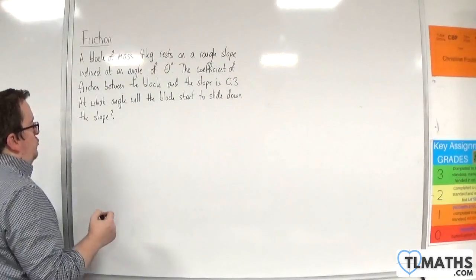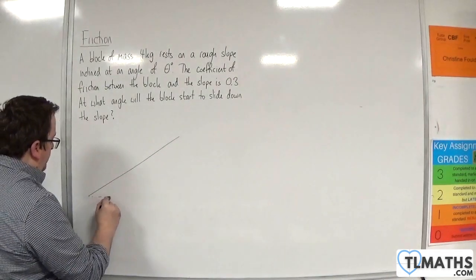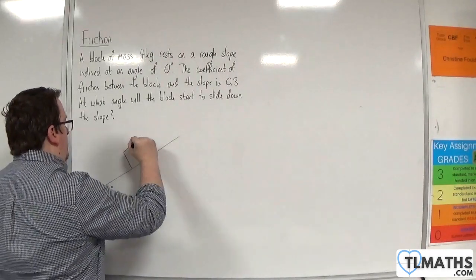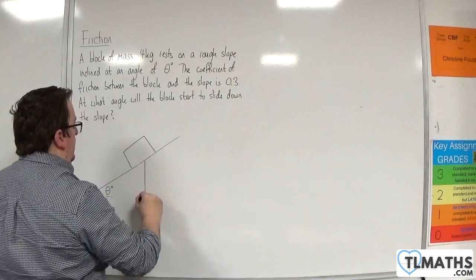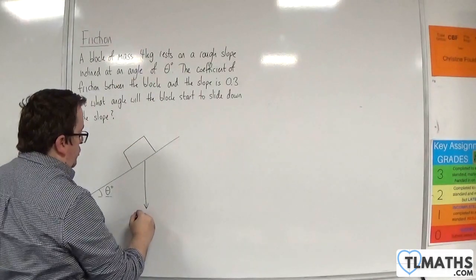Okay, so let's draw a diagram. So here's my slope. Here's my angle of theta degrees. Here's my block. And it will have a weight of 4 times g.